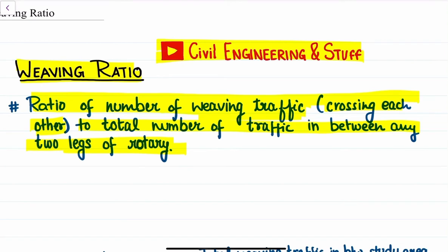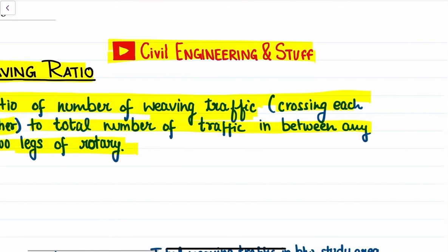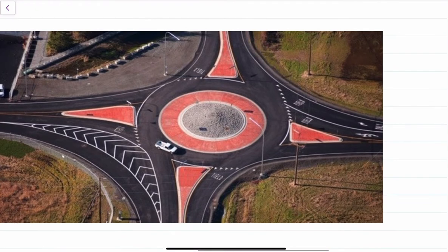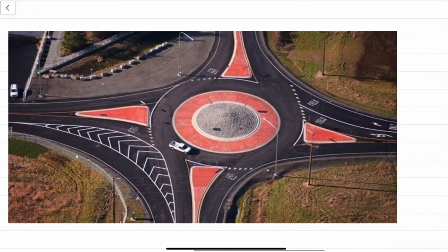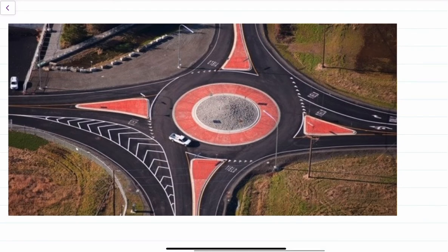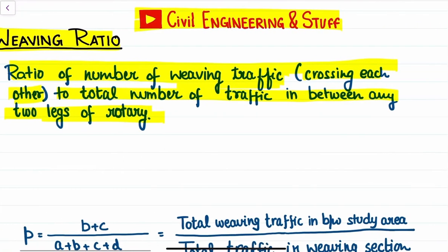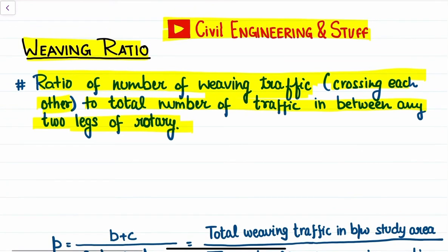Let us discuss what this definition means. We have a rotary, and we have discussed about rotary in the previous lecture in detail — what a rotary is, its benefits, and how we design it. You can refer to that lecture for more detail. To discuss weaving ratio, let us again look at the definition: it is the ratio of number of weaving traffic — the traffic that is crossing each other — to total number of traffic in between any two legs of the rotary.